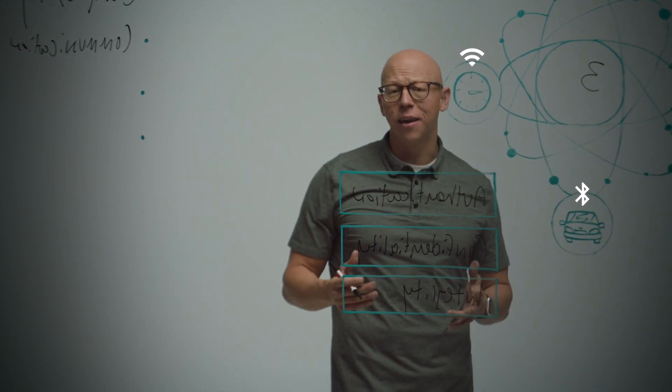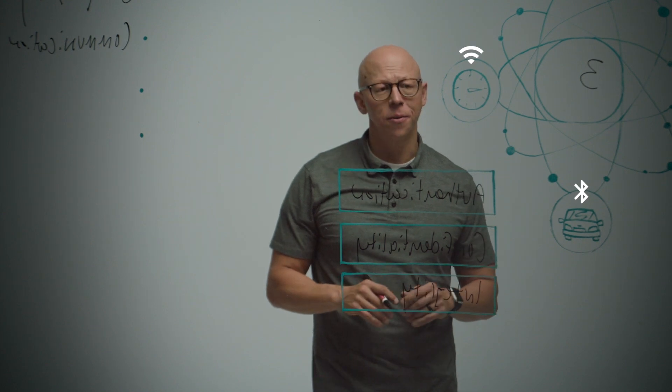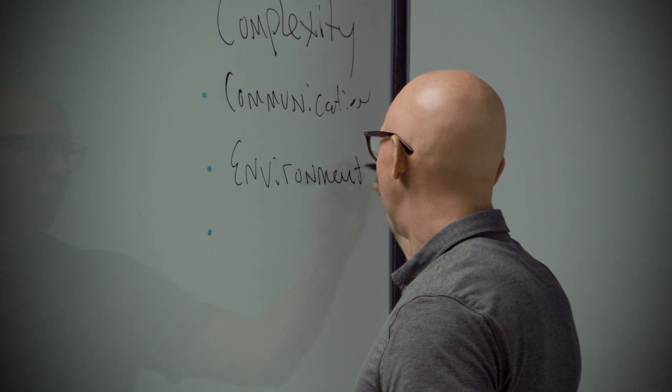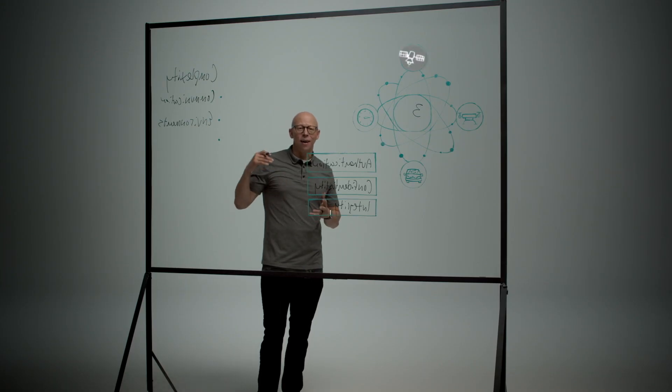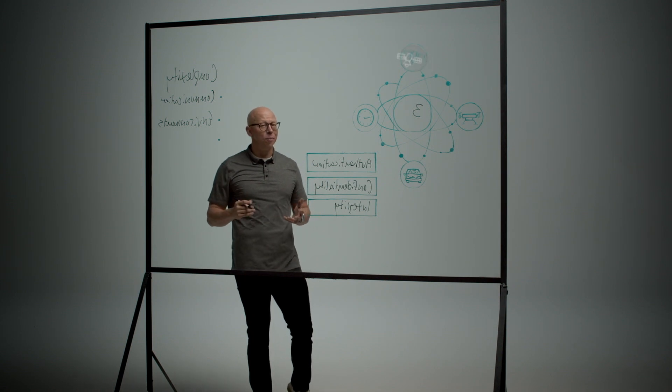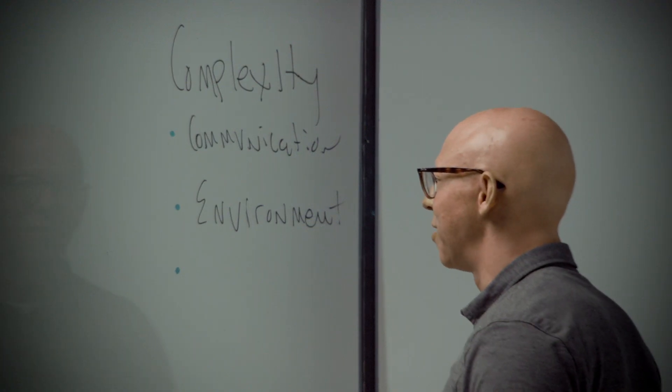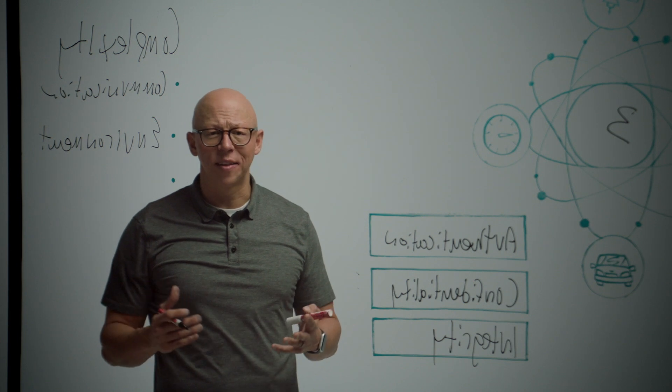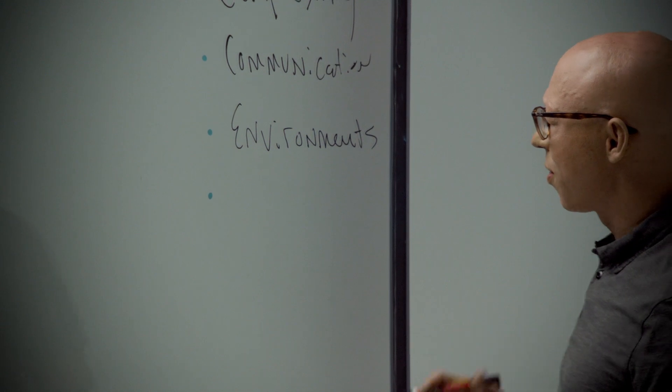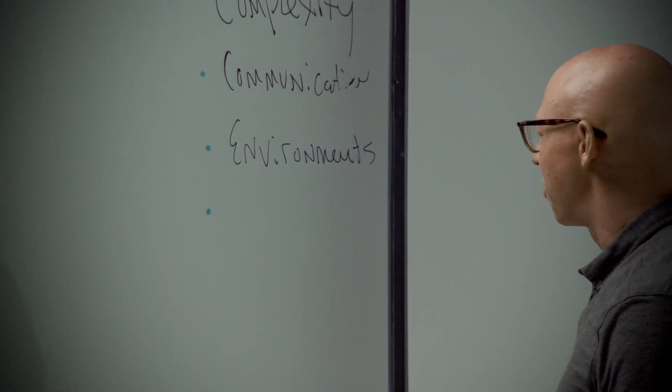The second complexity is the environments in which these devices are deployed. For example, a satellite hovering in the atmosphere is a very different environment than a smart home. A hospital and the complexities of regulatory burdens and the networks that they have is very different from a small business. The variation in environments needs to be thought through when addressing cybersecurity.